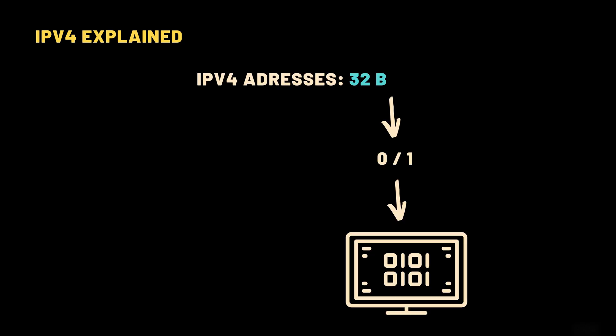IPv4 uses 32 bits to create an address. A bit, short for binary digit, is the smallest unit of data in computing. It can have only two possible values: 0 or 1. Think of it like a light switch — it's either off (0) or on (1). Everything in a computer — text, images, videos, music — is ultimately made up of long strings of these bits. And so are IP addresses. An IPv4 address is simply a string of 32 bits.